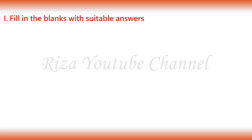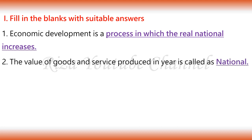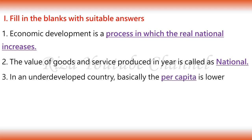Fill in the blanks with suitable answers. 1. Economic development is a process in which the real national income of a country increases. 2. The value of goods and services produced in a year is called national income. 3. In an underdeveloped country, basically the per capita income is lower.